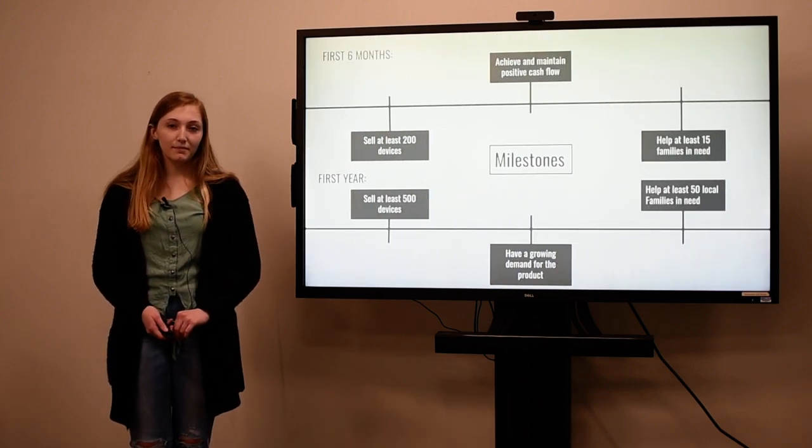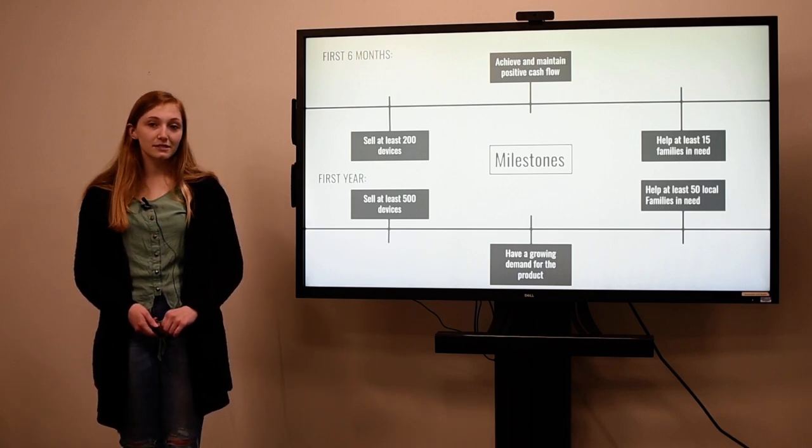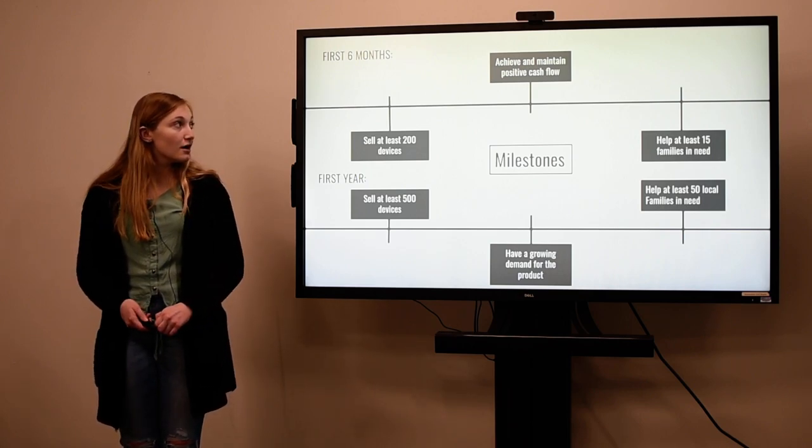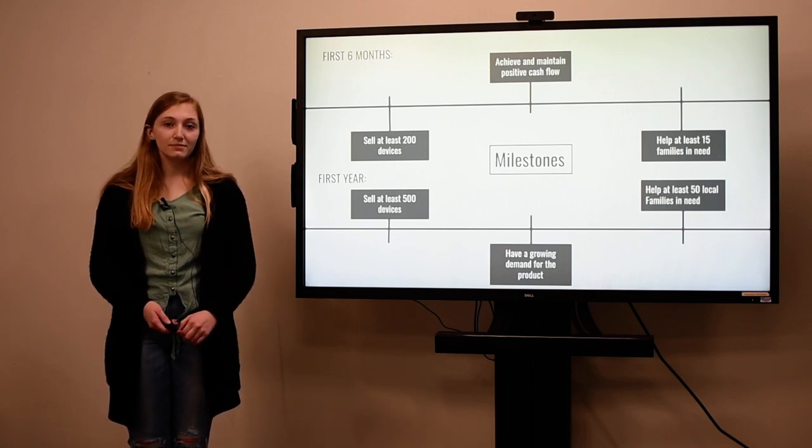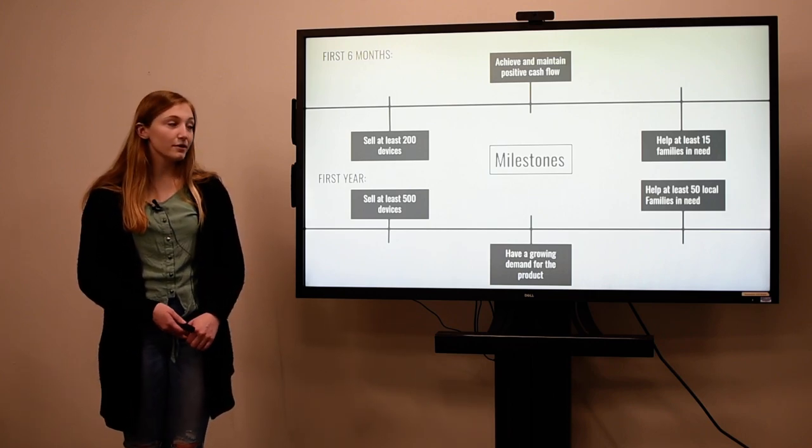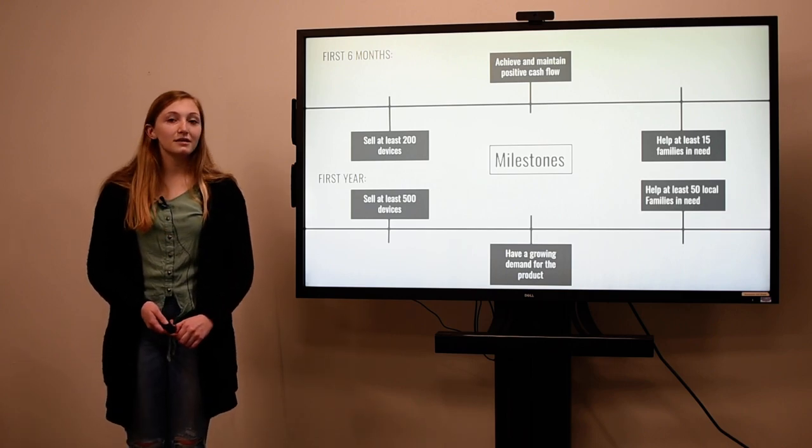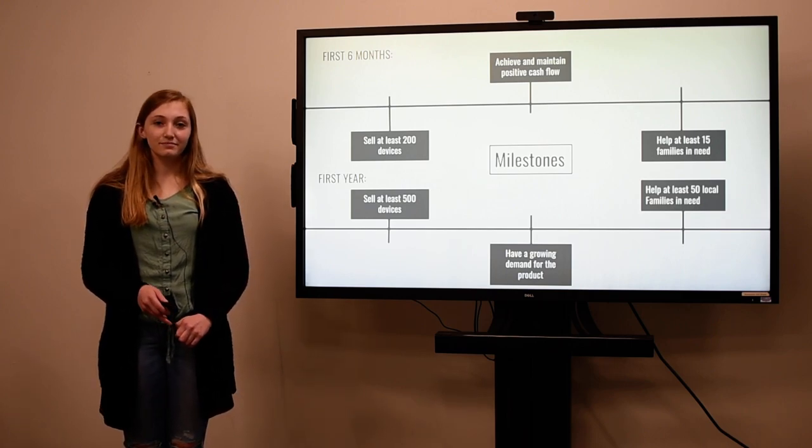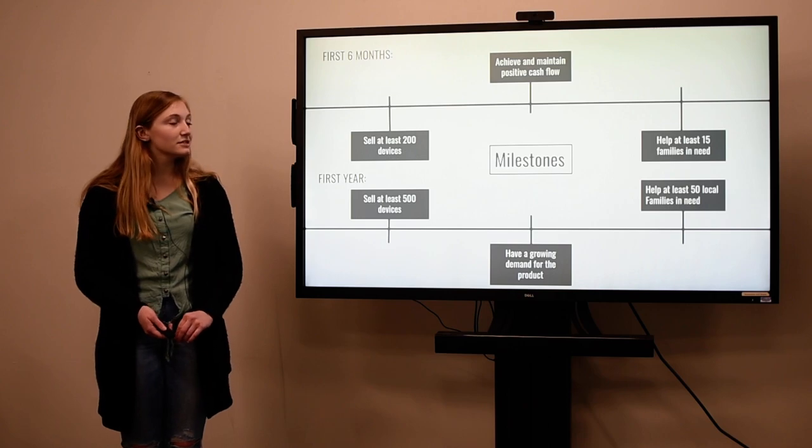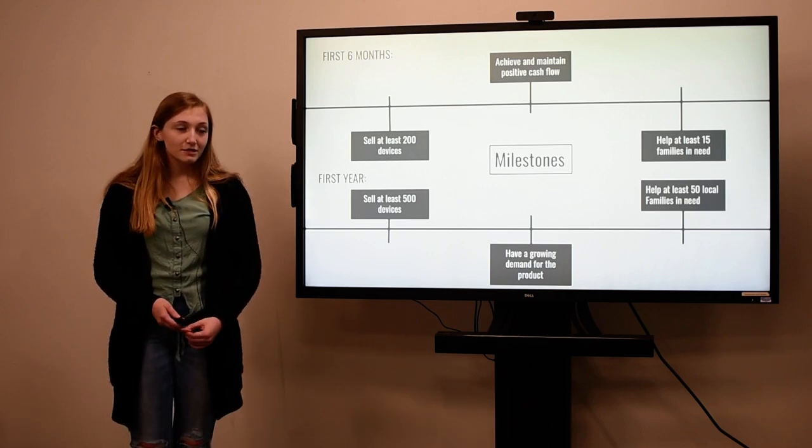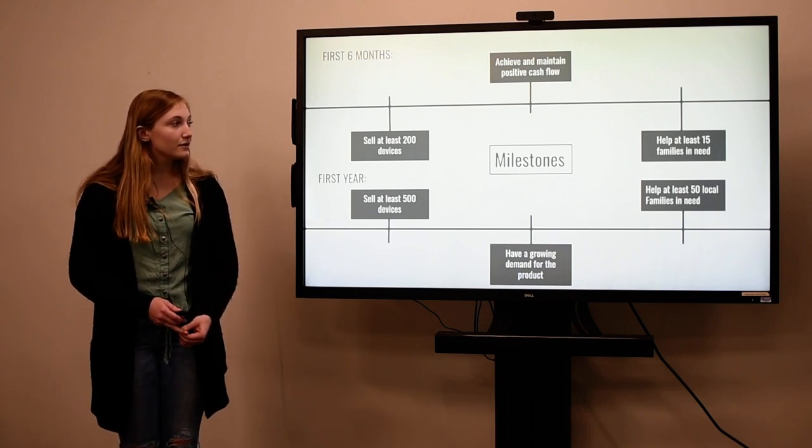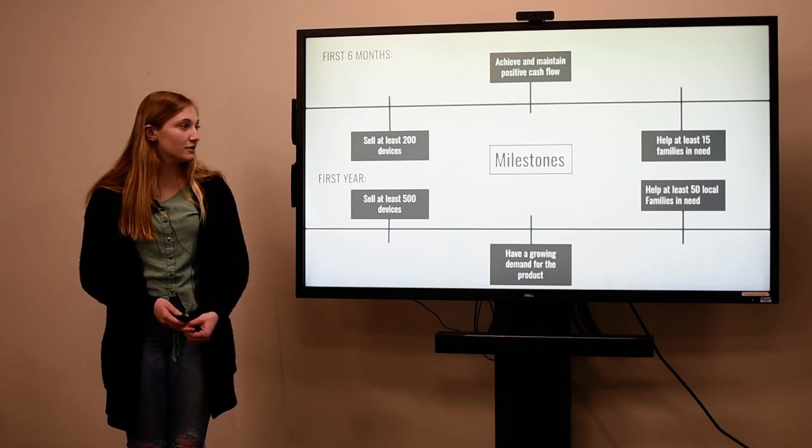And then here's some milestones that I have within the first six months and within the first year. So I would like to sell at least 200 devices within the first six months, which is probably kind of a low number but since I would need time to get everything started up I think that it's a reasonable number. I would like to achieve and maintain a positive cash flow and then I would like to help at least 15 families who are in need locally.